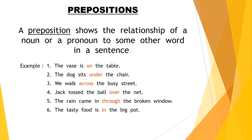Sentence 4: Jack tossed the ball over the net. It tells us where Jack tossed the ball — he tossed it over the net. Sentence 5: The rain came in through the broken window. How did the rain come in? Through the broken window.